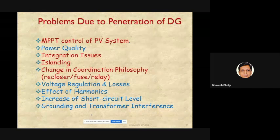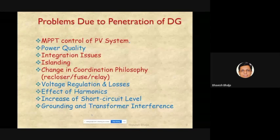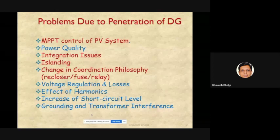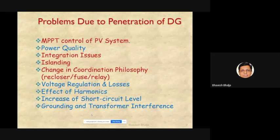The last important issue is grounding and transformer interference. Grounding plays an important role in distribution networks — there are different types of grounding such as resistive grounding, resonance grounding, and Peterson coil — and because of grounding, several other issues also arise.